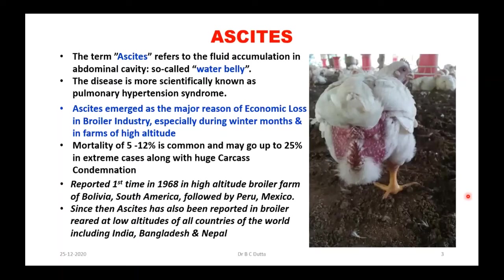Mortality of 5–12% is common but may go up to 25% in extreme cases, along with huge carcass condemnation. In processing plants, ascites birds are 100% condemned. Even in our type of marketing, ascites birds are very difficult to sell because the meat quality is disturbed — the meat becomes darker. People refuse to purchase those types of chickens.